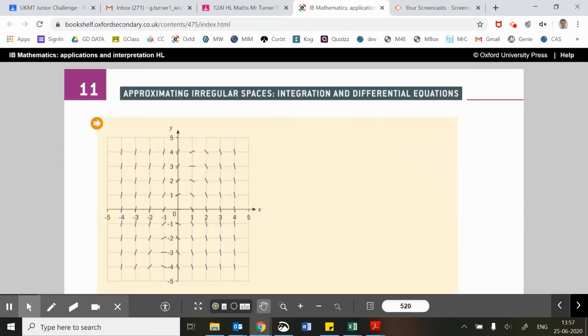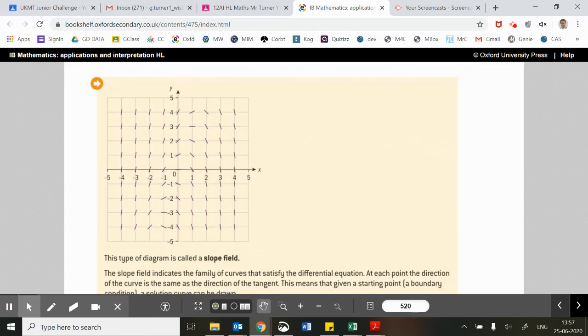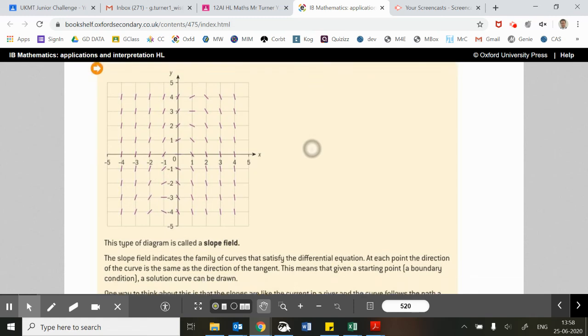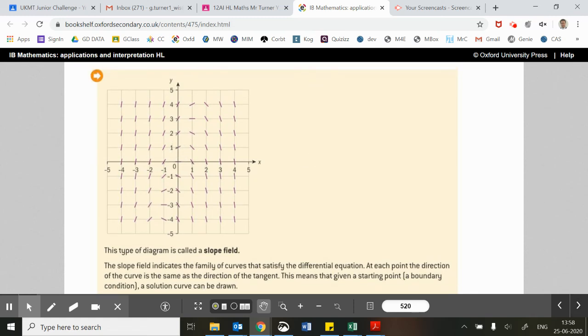Okay, so if you do that for the entire grid, there we go. Maybe you'll be asked to do that for the entire grid in an extended question, or maybe you'll be asked to complete a little bit of it. So there we go. That would be your slope field in this case.